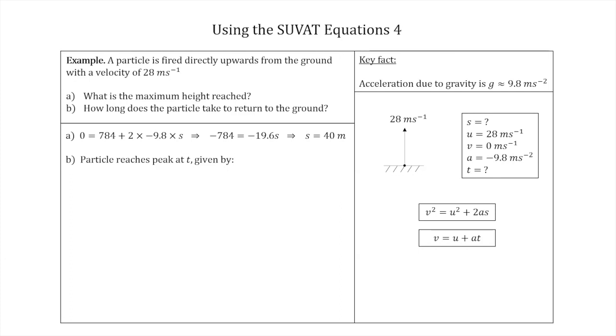So let's calculate the time the particle reaches its peak. So we're going to call it t. So the particle reaches peak at t, which is given by, so we just plug into this second equation, once again the velocity is zero at its peak, so it's zero equals 28, that's the initial velocity, minus 9.8 t. Rearrange and you'll get minus 28 equals minus 9.8 t. So t equals 2.86 seconds.